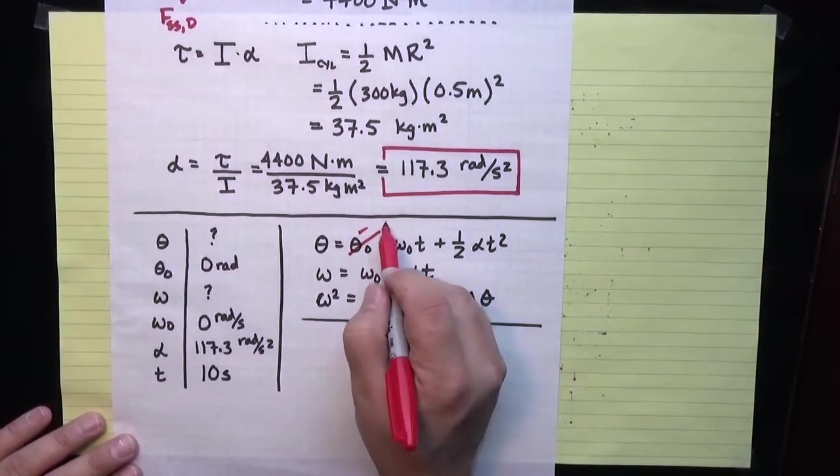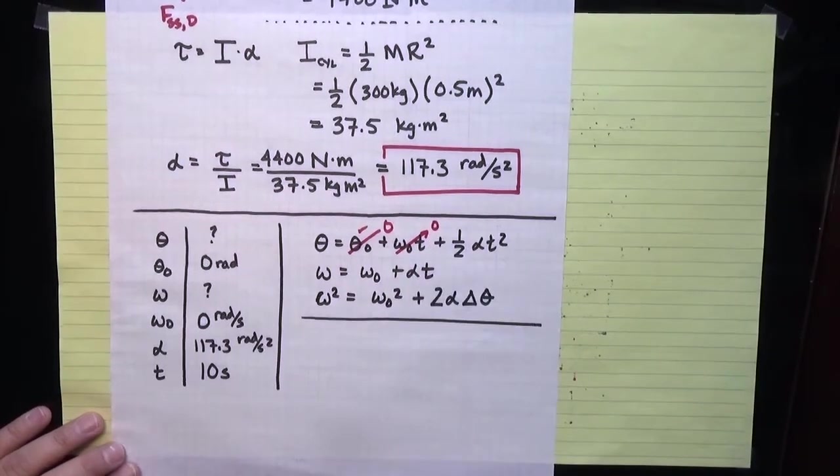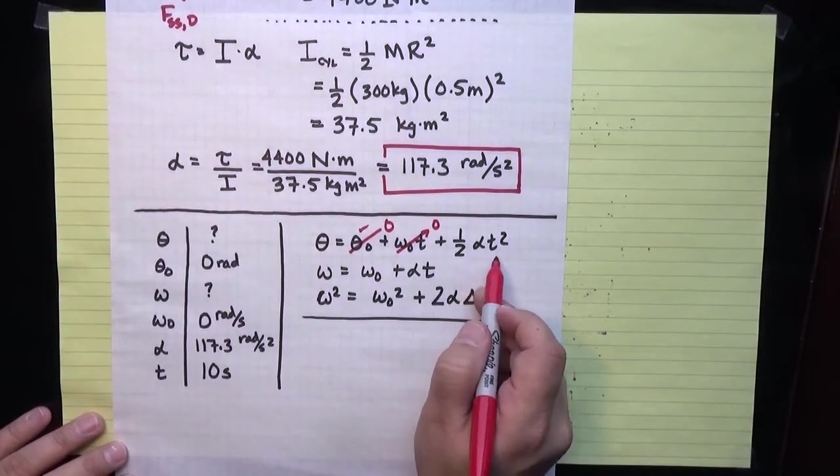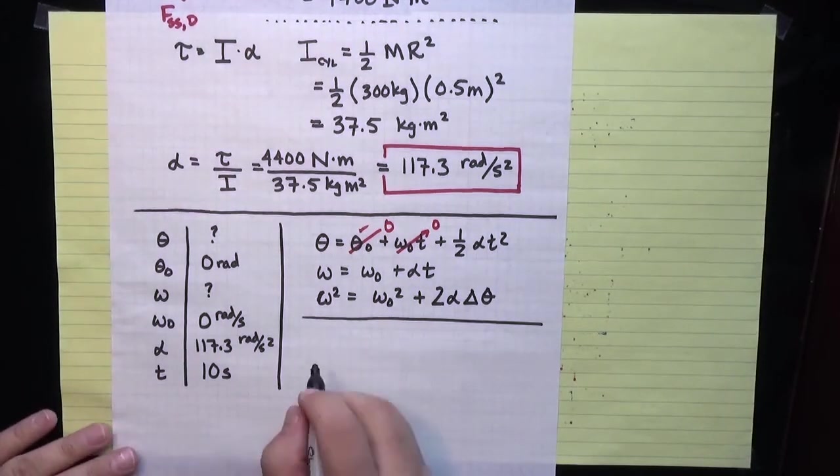I don't know theta, that's the thing I'm asked to find. I do know theta naught, in fact it's zero. I do know omega naught, it's zero. I'm told we start at rest. I know alpha and I know t, so this becomes a very straightforward equation for the total angle that I rotate through.